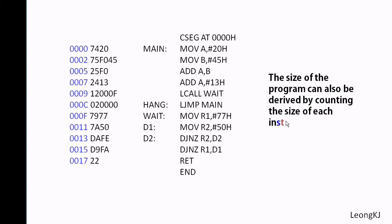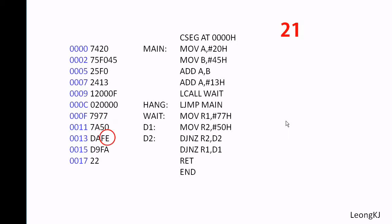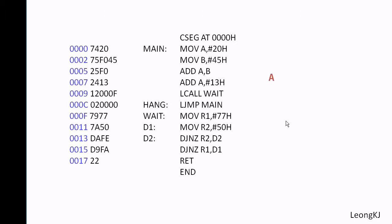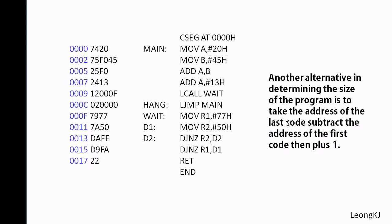The size of the program can also be derived by counting the size of each instruction in the machine codes column — the first byte, the second byte, the third byte, and so on. The program has a total of 24 bytes.